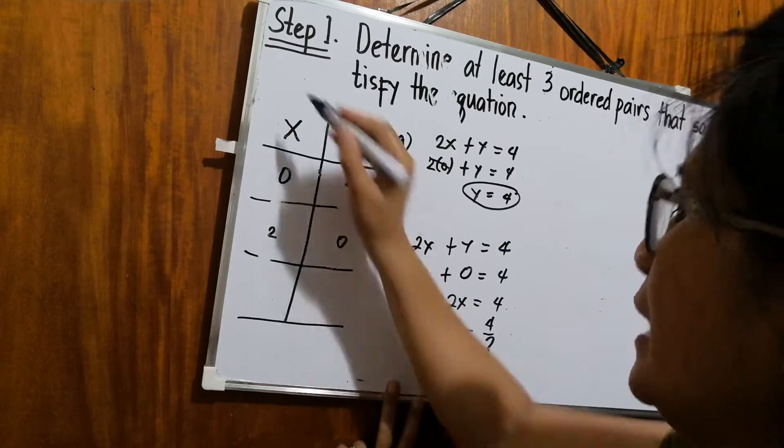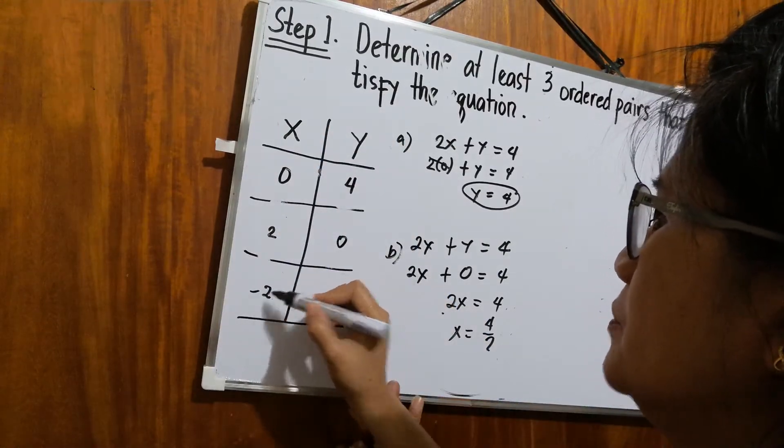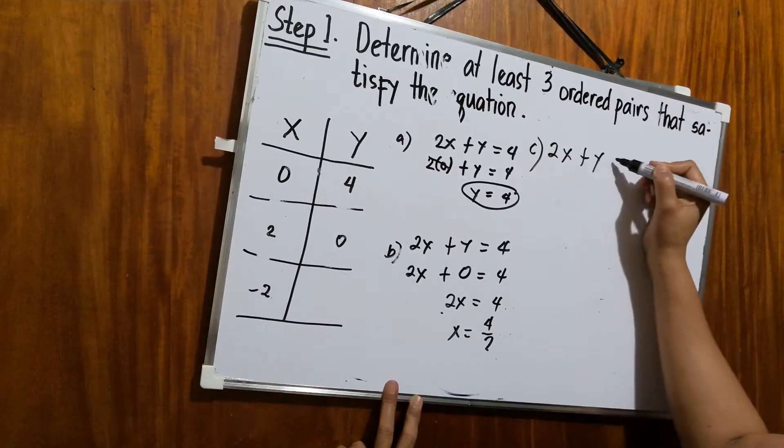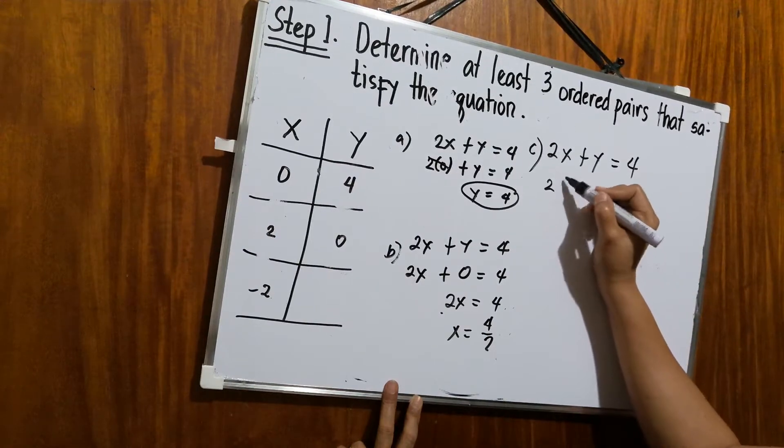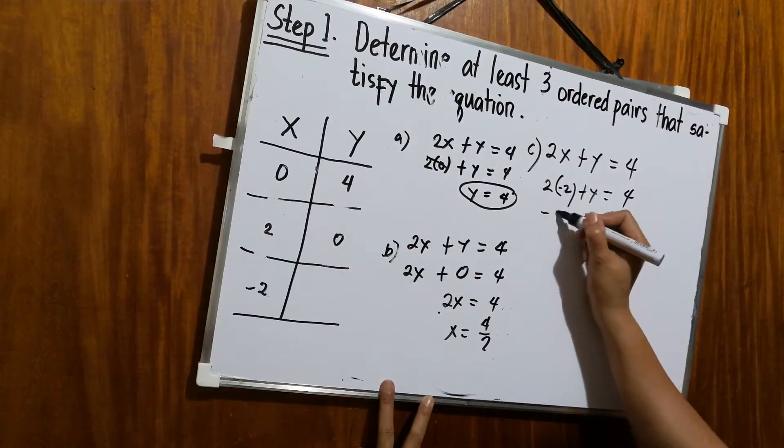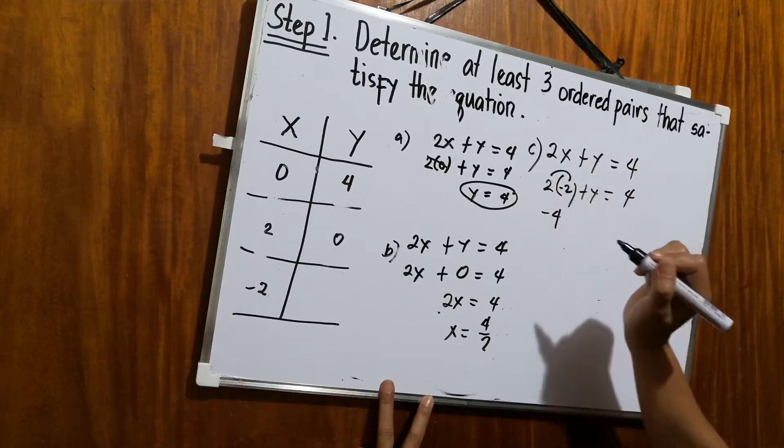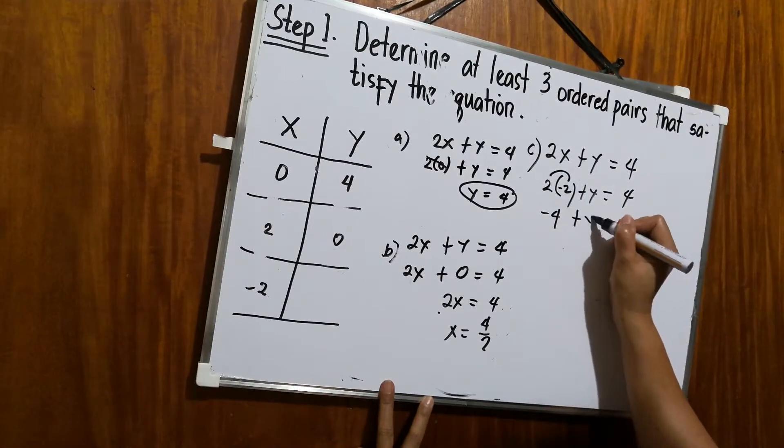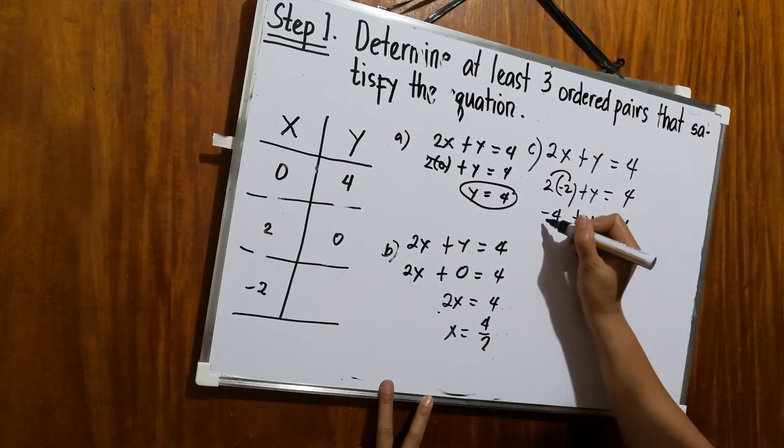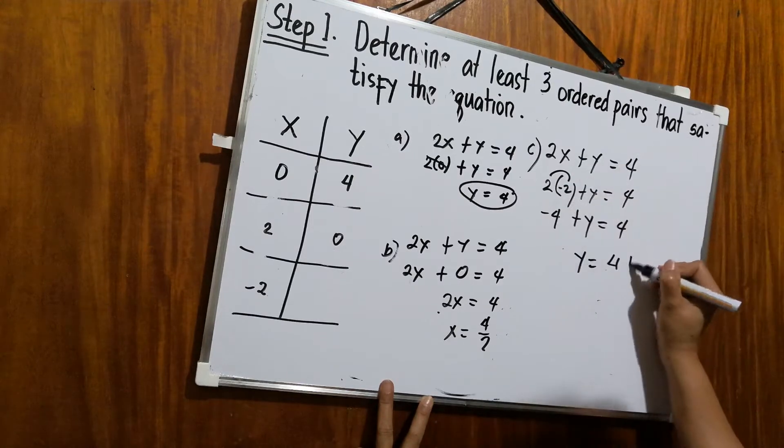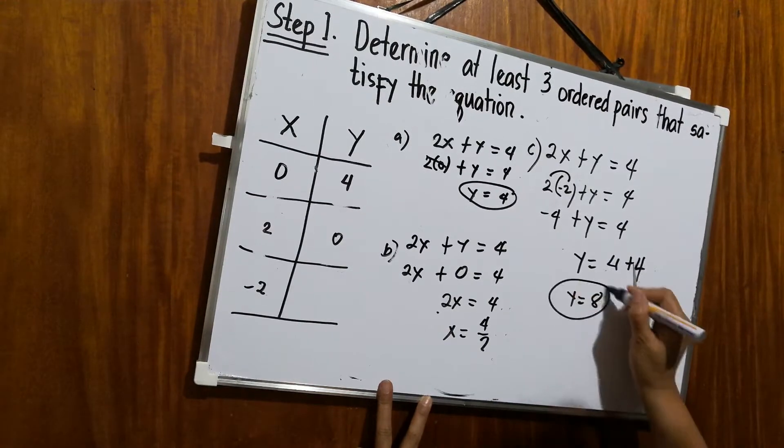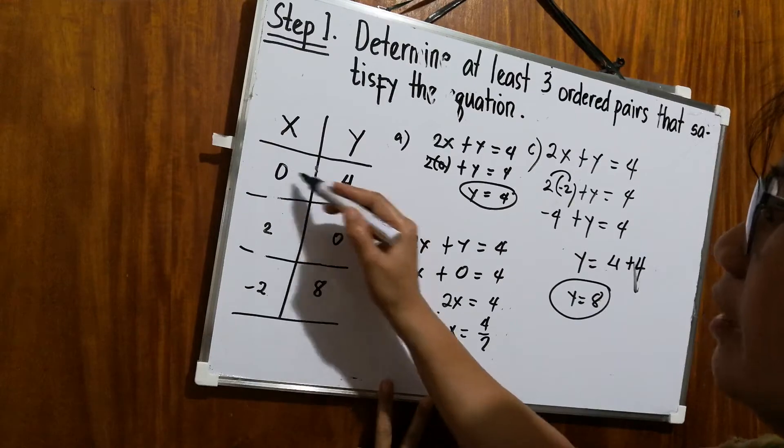For example, let's go back to x. Negative 2. So what happened to 2x plus y equals 4? It will be 2 times negative 2 plus y equals 4. This is negative 4, multiplying positive 2 and negative 2. Then plus y equals 4. Transposing negative 4 to the other side, that will be positive 4. So therefore, the value of y is positive 8.